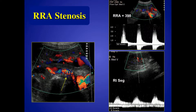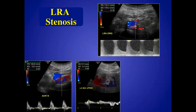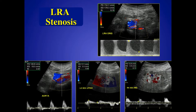Here's a stenosis in the proximal right renal artery — you can see the aliasing, the velocity is almost 400, and you can see tardus waveforms inside the kidney. Here's the left renal artery — turbulence and aliasing at the origin. The velocity is over 700 centimeters per second, more than three times the velocity in the aorta. Classic tardus-parvus in the left kidney. If you're not sure whether it's tardus-parvus, bring up the right side — the right side has a perfect upstroke with an early systolic compliance peak. Big difference between the waveforms when you're comparing.